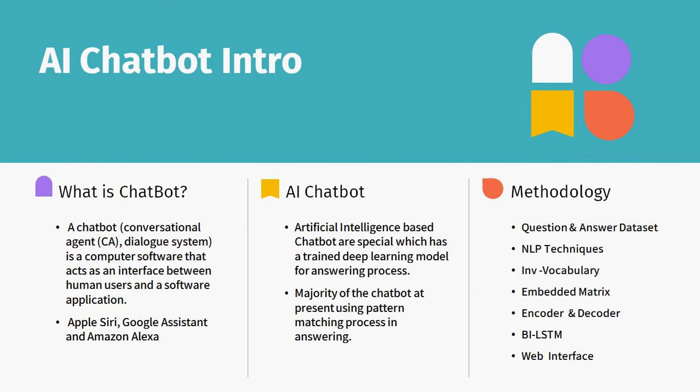What is a chatbot? A chatbot is a conversational agent — a dialogue system. It is a computer software that acts as an interface between a human user and a software application. The chatbot represents the receptionist: when you go to a restaurant and ask about the menu or available items, the chatbot represents your restaurant instead of a human — just like Apple Siri, Google Assistant, and Amazon Alexa. You ask a question, and it delivers the answer in a proper way.